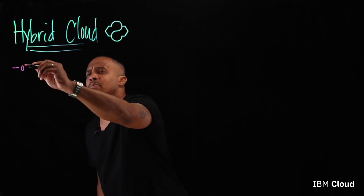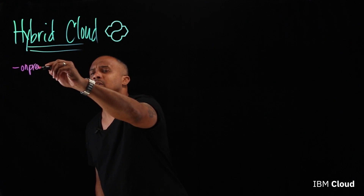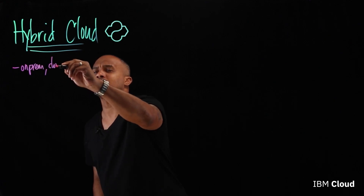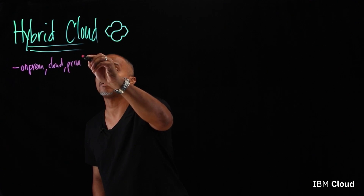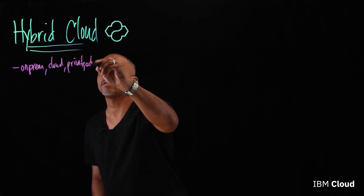What really is hybrid cloud when we talk about it? It seems like a very loaded term — it's a buzzword we often hear about, but let's simplify it. Hybrid cloud is really the combination of on-premise, cloud, private cloud, and edge — all the different types of computing environments — combining them up into one.